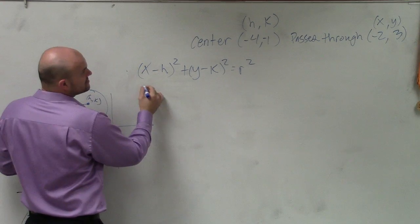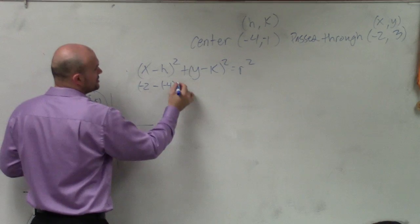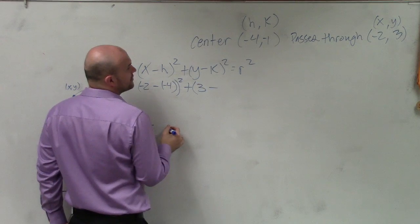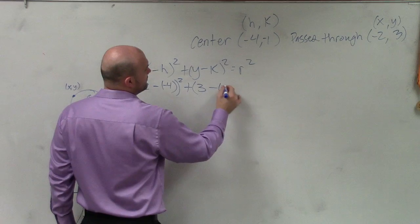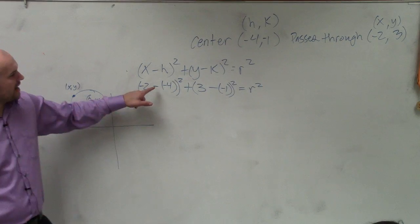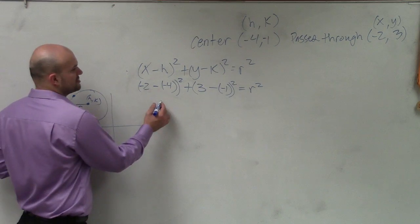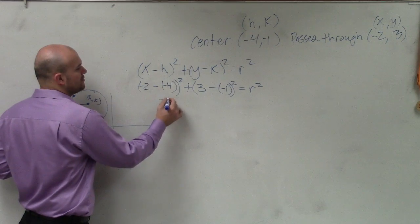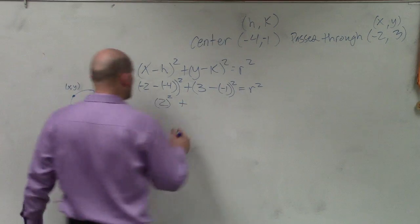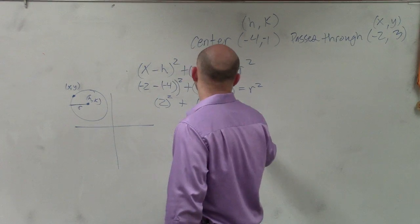So therefore, I have x, which is negative 2, minus my center, which is negative 4. Remember, this is question number 5. y is 3 minus negative 1, all right? So now I do negative 2 minus a negative 4, which is going to be positive, so that'll be 2 squared. And we don't know what the radius is yet. We're trying to solve for the radius. OK. That becomes 4. 3 minus that, that becomes 4 squared equals r squared.